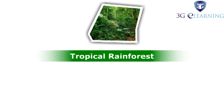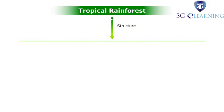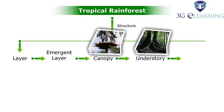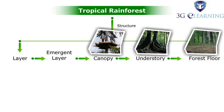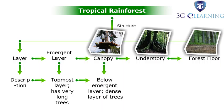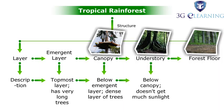The tropical rainforest is structured into four layers: the emergent layer, the canopy, the understory, and the forest floor. The topmost layer has very tall trees. Below the emergent layer is the dense canopy layer of trees. Below the canopy is the understory, which doesn't get much sunlight.